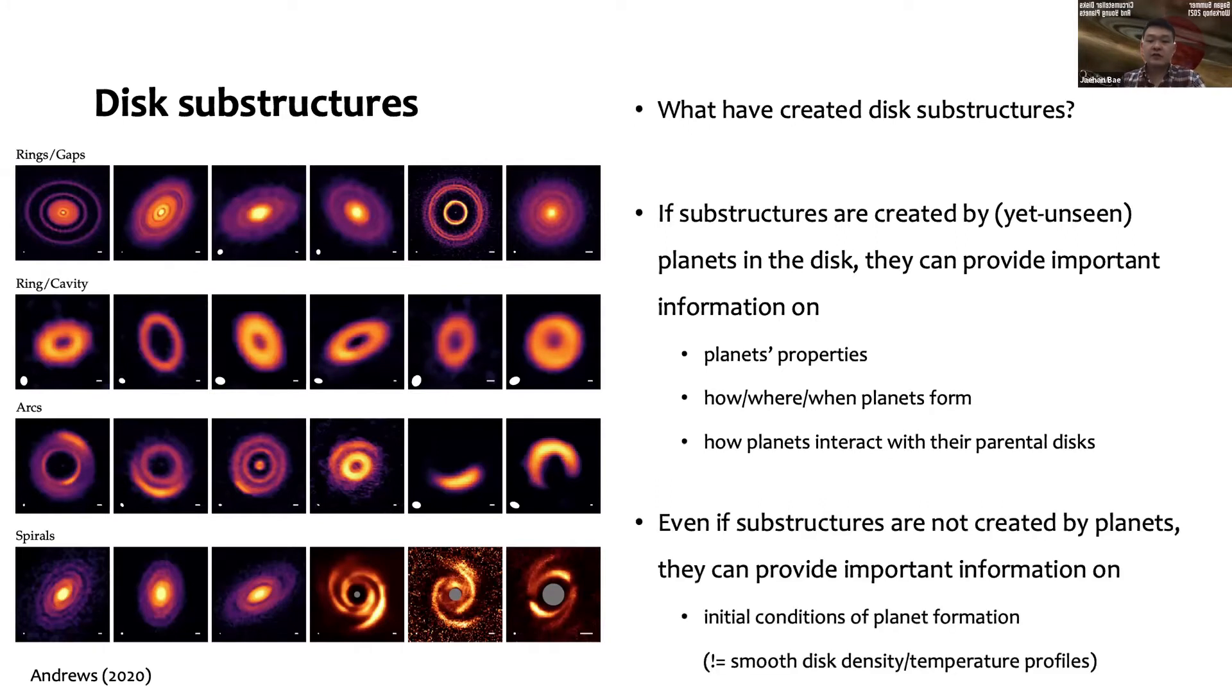Even if these substructures are not created by planets but something else, we can still learn a lot about planet formation processes. One thing I'd like to highlight is that in a lot of planet formation simulations and theories we oftentimes assume that the disk is smooth in terms of surface density distribution and temperature distribution. We oftentimes adopt power-law distribution.